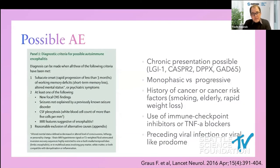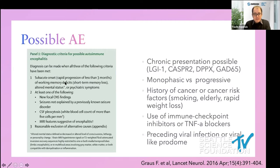When approaching a patient with possible autoimmune encephalitis, it's valuable to keep in mind the diagnostic criteria. This diagnosis can be made when all three criteria are met: subacute onset — less than three months — of working memory deficits, psychiatric symptoms, or altered mental status; and at least one of the following: new focal CNS finding, seizures not otherwise explained, CSF pleocytosis with white cell count greater than five, MRI features suggestive of encephalitis; and reasonable exclusion of alternative causes.